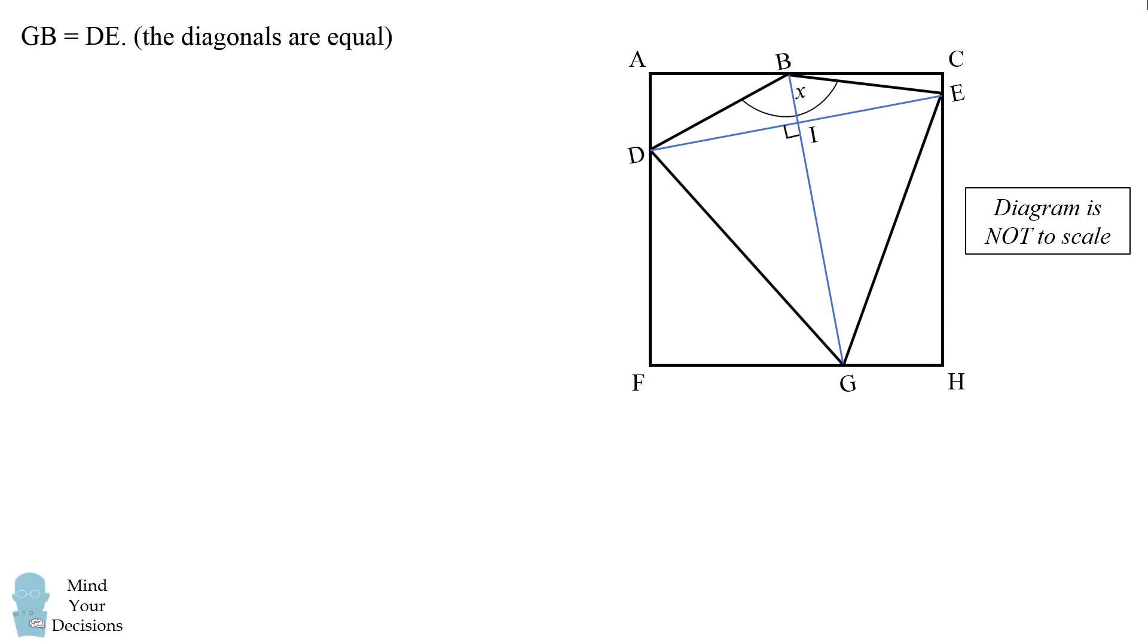Now that we know that the diagonals of the kite are congruent, we can then say, since we know DG is equal to GB equals EG from the given information, and we've shown that the diagonals are equal to each other, we can therefore conclude DGE is an equilateral triangle. This means angle DGE is equal to 60 degrees.